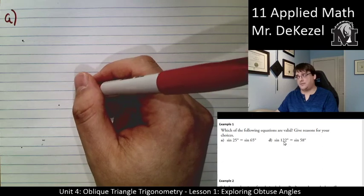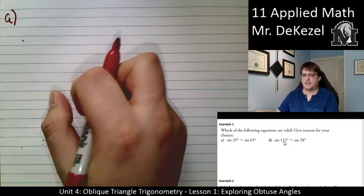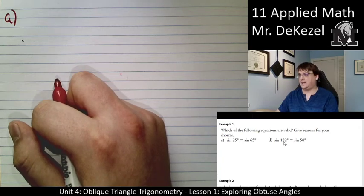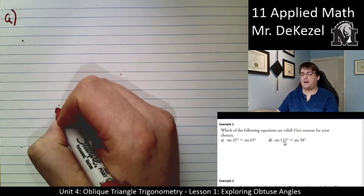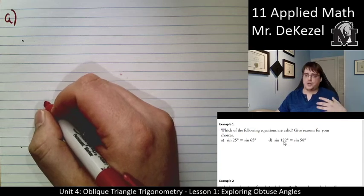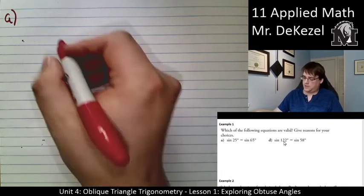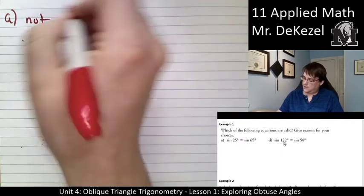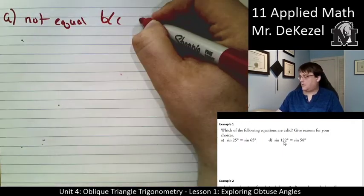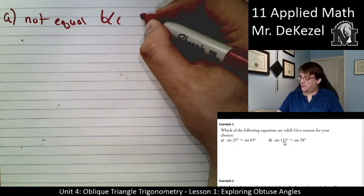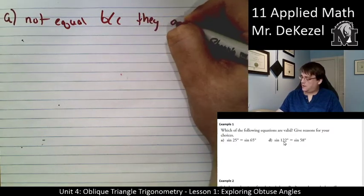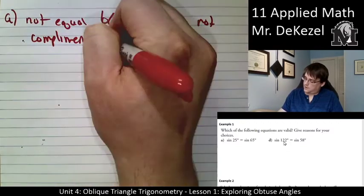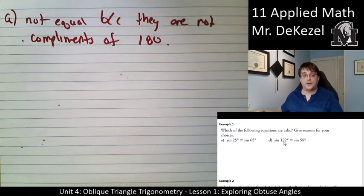So for A, I'm looking at the sine of 25 and the sine of 65. Those are not complements. They're complements of 90, but that's not what we're dealing with. We're dealing with complements of 180. So I would say that sine of 25 and sine of 65 would not be equal.